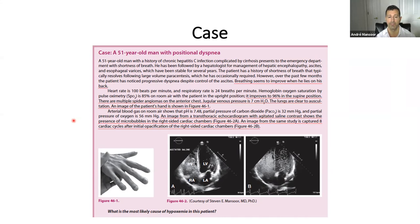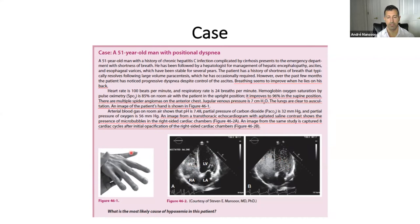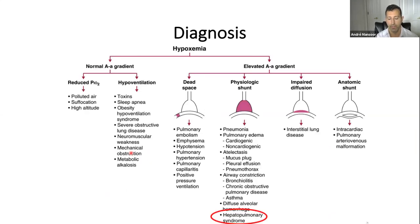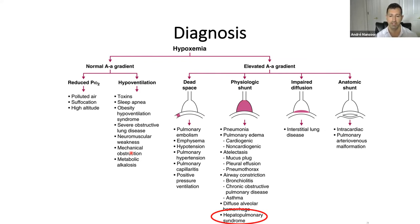An image of the patient's hand shows clubbing — something that the eyes don't see if the mind doesn't know to look for it. If you didn't approach this patient thinking he could have hepatopulmonary syndrome, you may not have looked closely at his hands. An echocardiogram with agitated saline shows microbubbles in the right cardiac chambers, and eight cardiac cycles later those bubbles appear on the left side of the heart — indicating an intrapulmonary shunt. The diagnosis is hepatopulmonary syndrome. We were able to make this diagnosis by creating a framework that informed us what information to gather.